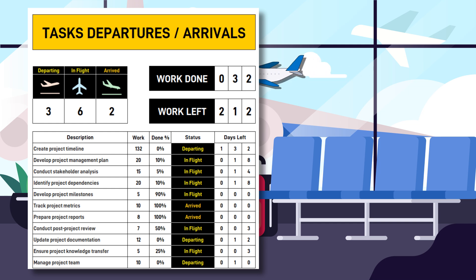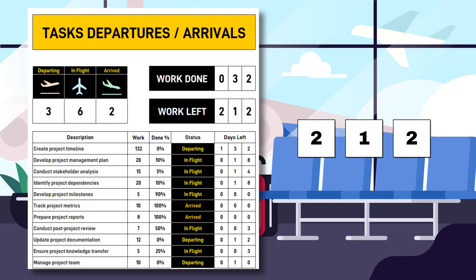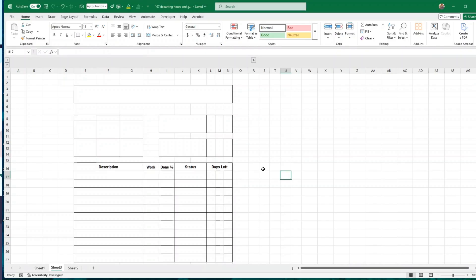In this tutorial I am showing you step by step how to build the task dashboard with the airport theme. It is very simple to build. The most technical and also the most interesting part was to take a several digit number that usually sits in one cell and to have each digit sit in a different cell. So we'll see how I have done that. Welcome to this tutorial.